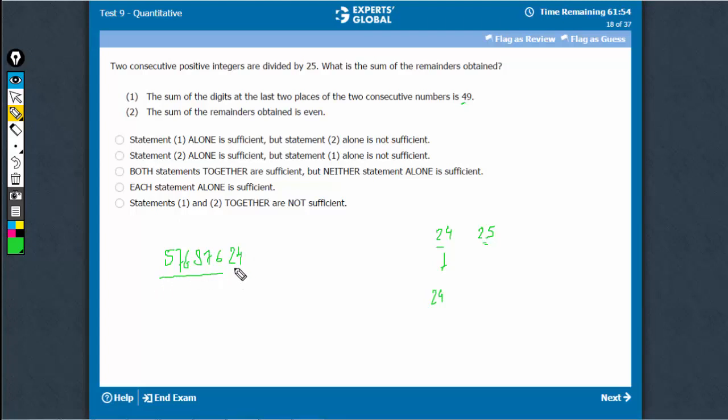the remainder with 25 depends only on the last two digits because this huge number can be written as 5, 7, 6, 8, 7, 6, 00 plus whatever comes here, 24.